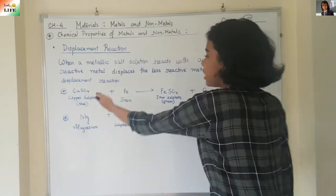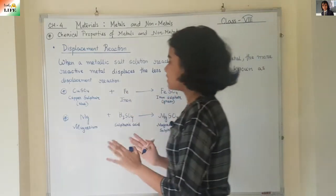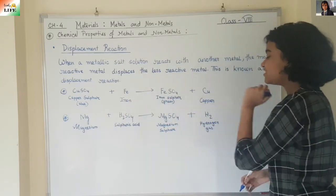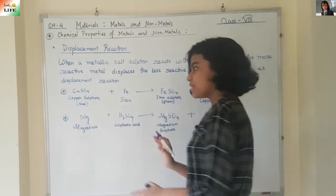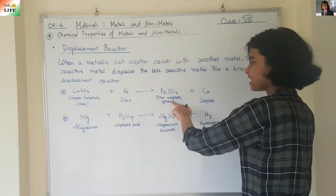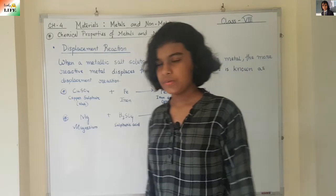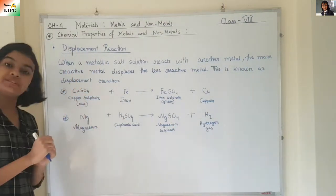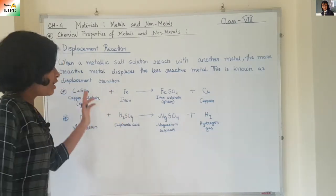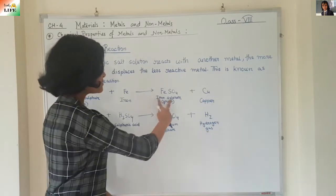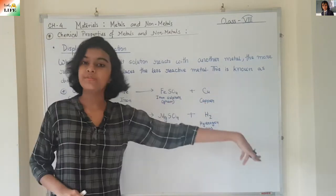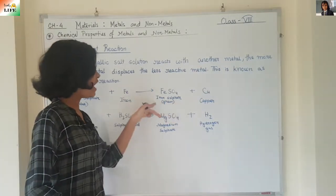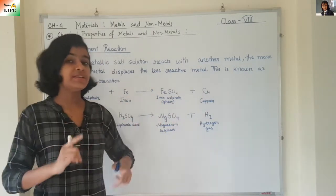Let's look at an example: copper sulphate plus iron gives iron sulphate plus copper. At first it was copper sulphate and iron was alone, but after the reaction takes place it becomes iron sulphate and copper becomes alone. So first it was copper sulphate and iron, and then it became iron sulphate and copper.